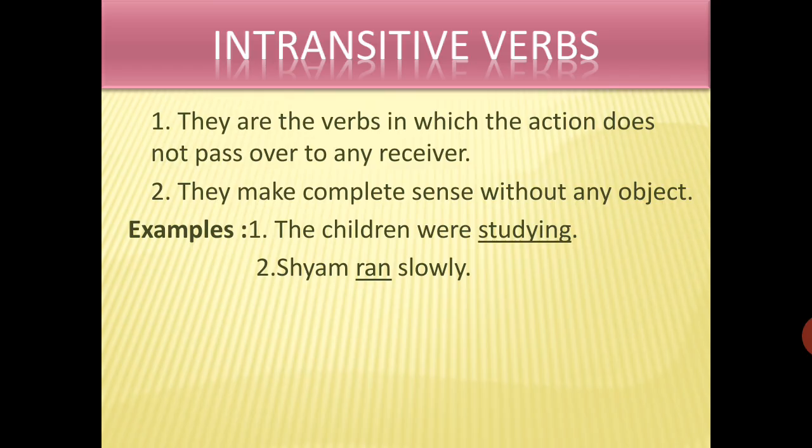Let us discuss them in detail. First type of main verbs — intransitive verb. Here, the verbs are those in which the action does not pass over to any receiver, because there is no object. They make complete sense without any object. For example, if I say 'the children are studying' — you are not knowing what the children were studying, there is no object. That's why 'studying' is an intransitive verb. Similarly, 'Sham ran slowly' — slowly is an adverb; the object is not known to you. That's why 'ran' is an intransitive verb.